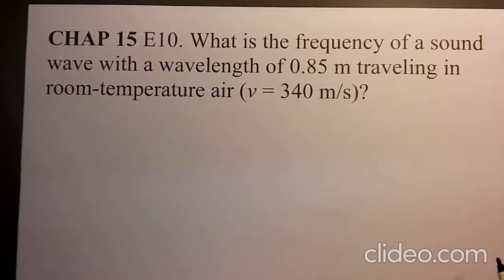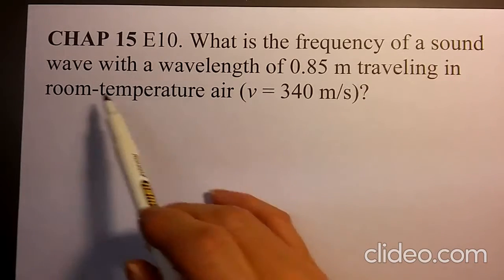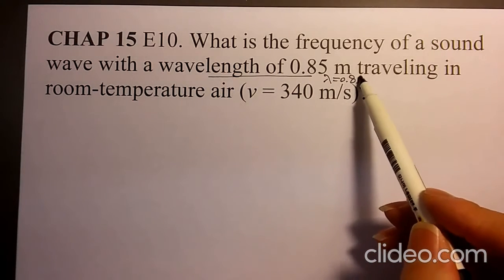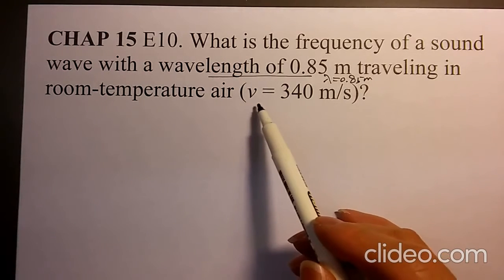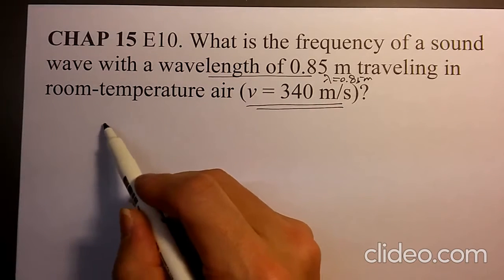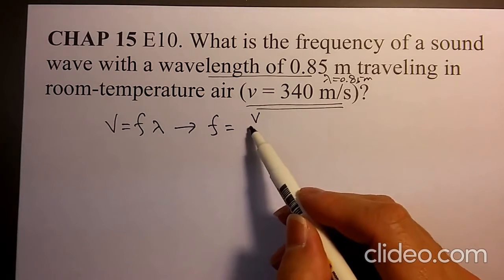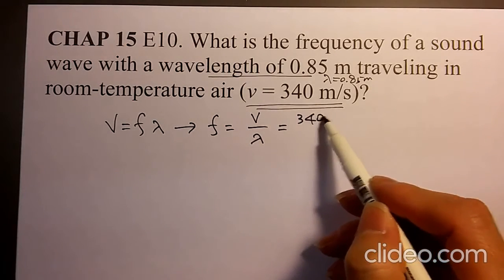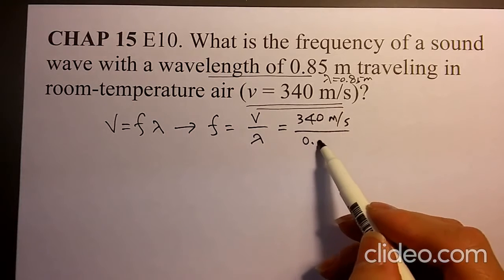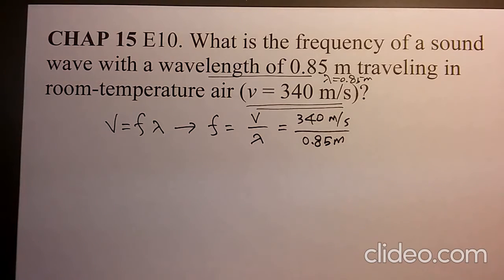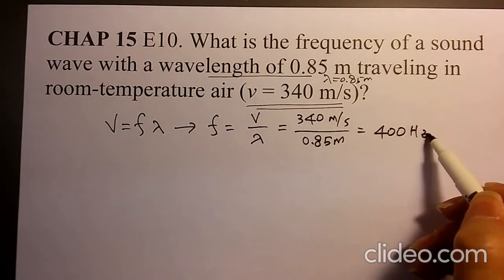Let's solve chapter 15 E10. What is the frequency of a sound wave with wavelength lambda equals 0.85 meters, traveling in room temperature air with velocity 340 meters per second? Using V equals F times lambda, frequency equals V over lambda, which is 340 divided by 0.85, giving 400 hertz as the frequency.